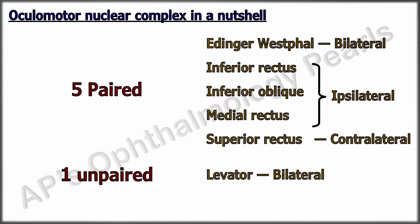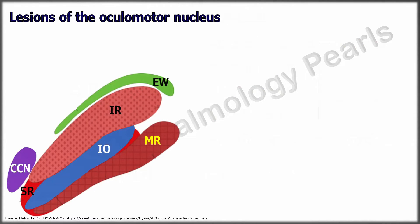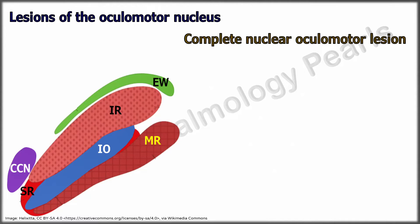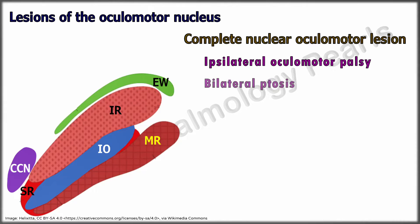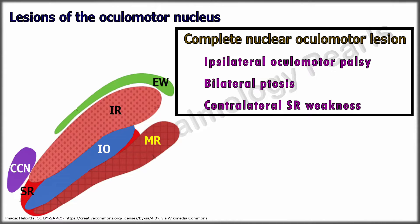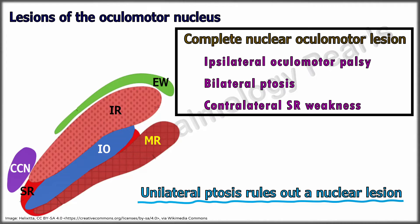Each oculomotor nerve will have both crossed and uncrossed fibers. A complete oculomotor nuclear lesion has the following features: a complete ipsilateral oculomotor palsy that includes internal ophthalmoplegia, along with bilateral ptosis and contralateral superior rectus weakness. However, most cases of nuclear oculomotor lesions are partial, with involvement of one or more muscles with or without pupillary involvement. In a nuclear oculomotor lesion, ptosis if present has to be bilateral or absent. Unilateral ptosis rules out a nuclear lesion.